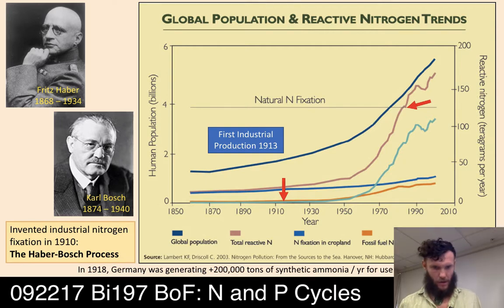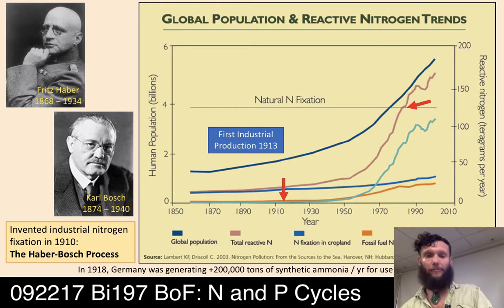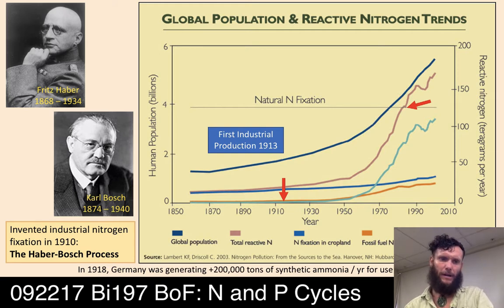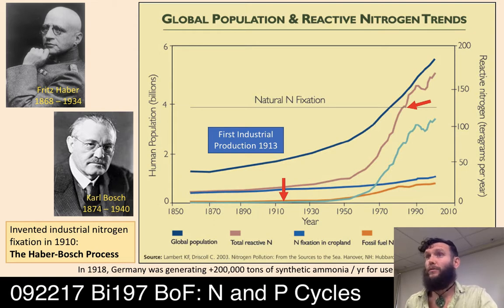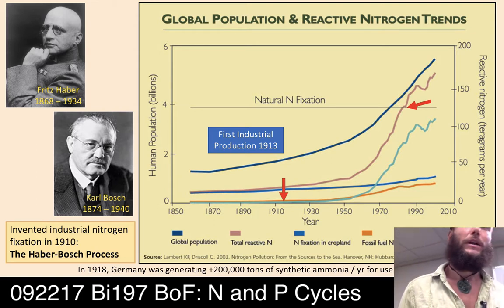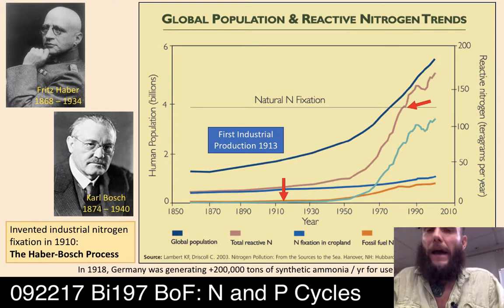Let's dive back in where we left off. I wanted to get through nitrogen last time and didn't quite make it. We were talking about Fritz Haber and Carl Bosch and the first industrial production of nitrogen, which is an essential element to all protein and nucleic acids.